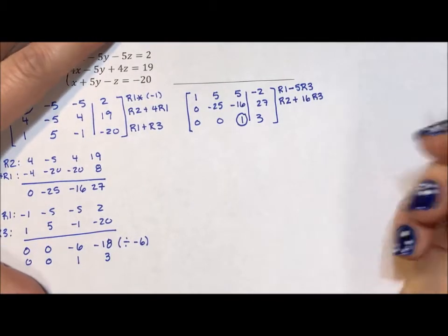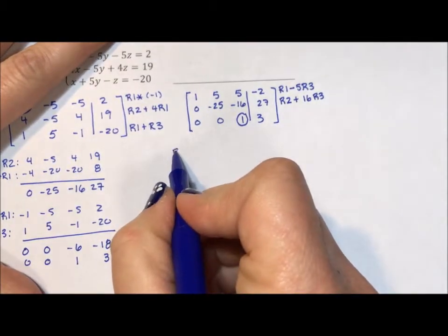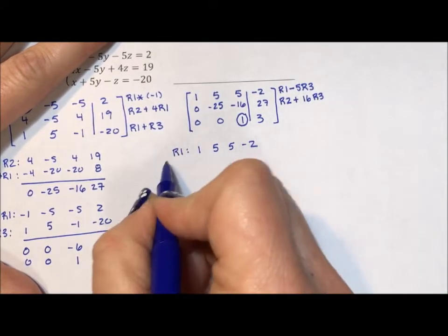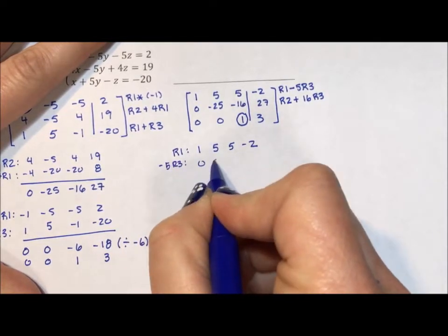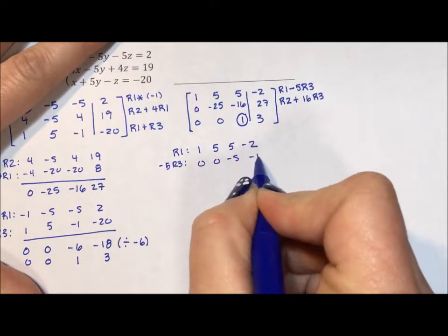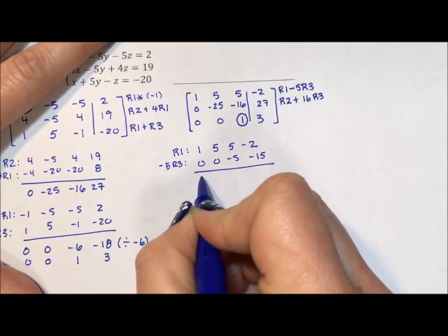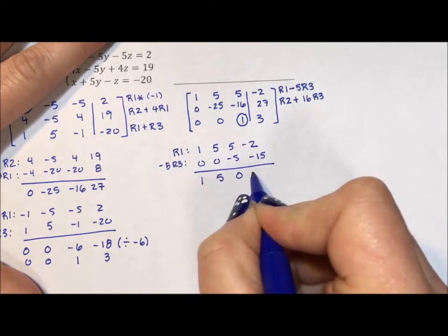Again, I'm going to pull everything out. So row 1 is 1, 5, 5, -2. Negative 5 times row 3 is 0, 0, -5, -15. So I'm going to get 1, 5, 0, -17.